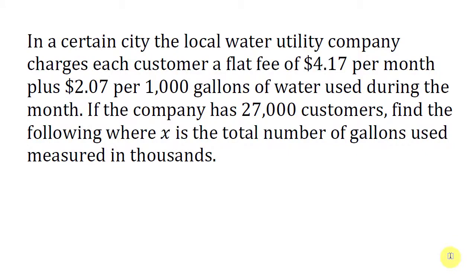Let's now look at another problem as an example of how to model a business problem using a function. In this problem, a local water utility company charges each customer a flat fee of $4.17 per month plus $2.07 per 1,000 gallons of water used during the month. The company has 27,000 customers. Find the following, where X is the total number of gallons used, measured in thousands.